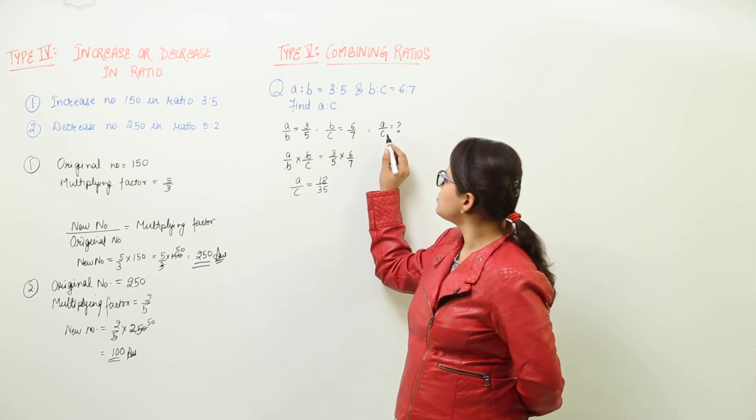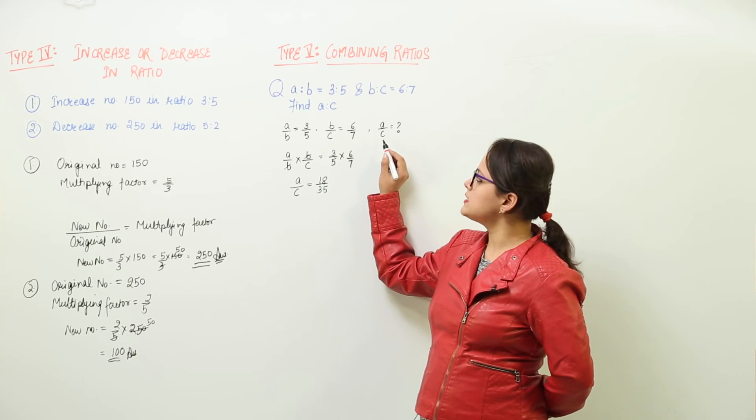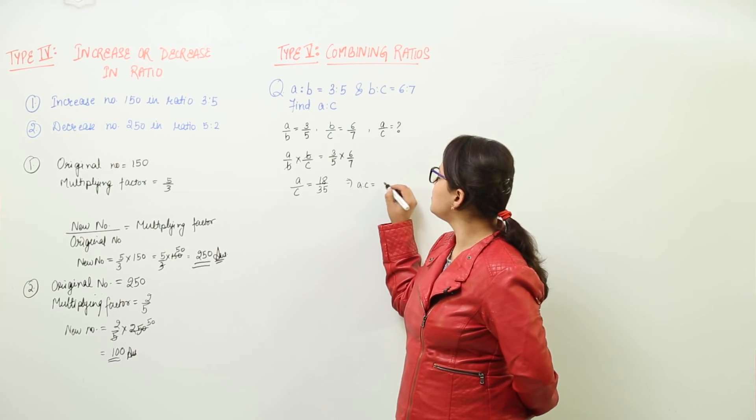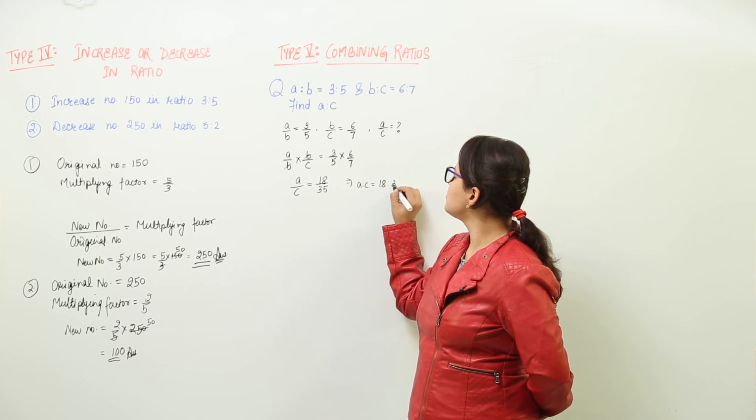So we have got the ratio that we were to find, that is A is to C. Now you can write A is to C is equal to 18 is to 35.